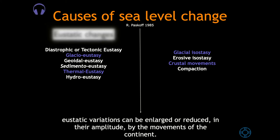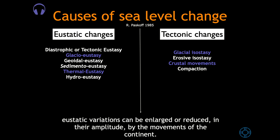In this context of eustatic and tectonic causes of sea level change, there are some important concepts. Under eustatic changes, we have diastrophic or tectonic eustasy, glacio-eustasy, geoidal eustasy, sedimento-eustasy, thermal eustasy, and hydro-eustasy. In the context of tectonic changes, we have glacial isostasy, erosive isostasy, crustal movements, and compaction. The eustatic variations can be enlarged or reduced in their amplitude by the movements of the continents.